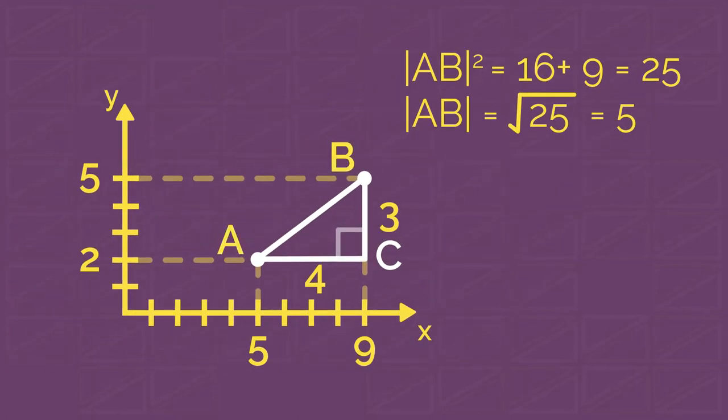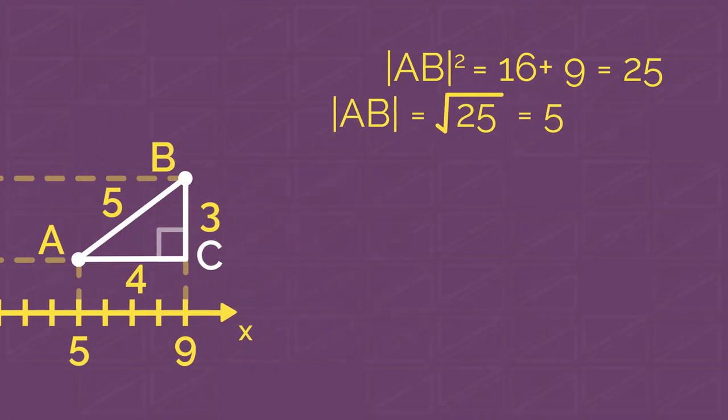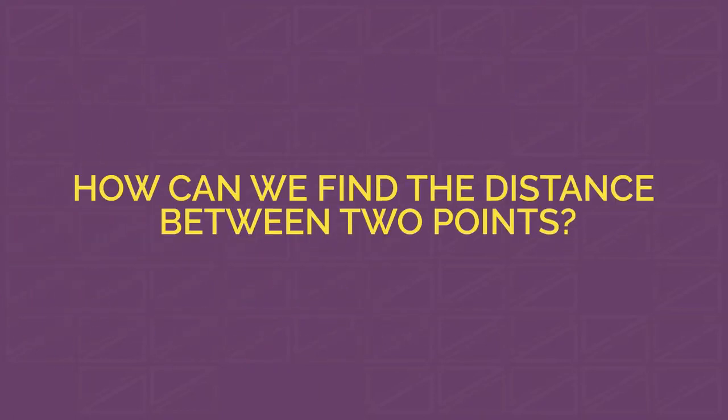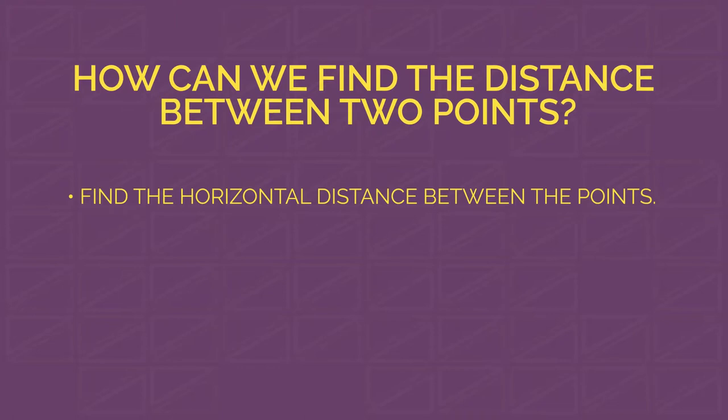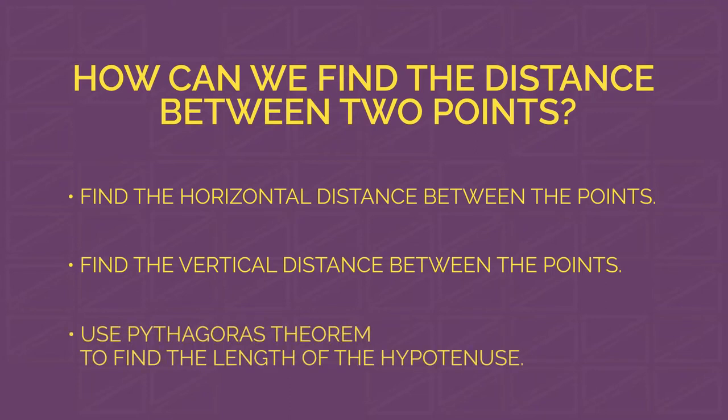Let's summarize. How can we find the distance between two points? Well, it's pretty easy. First, find the horizontal distance between the points. Then find the vertical distance between the points. And finally, use Pythagoras theorem to find the length of the hypotenuse, which is the distance we are looking for.